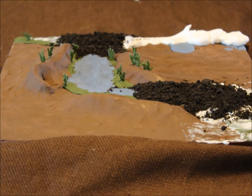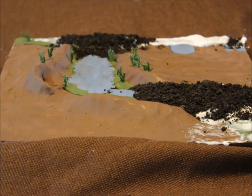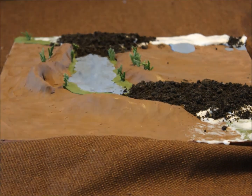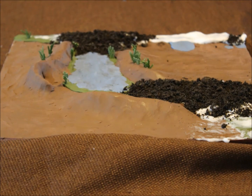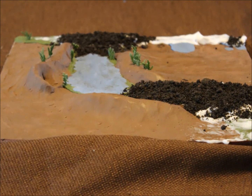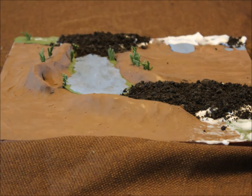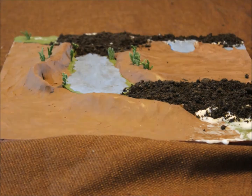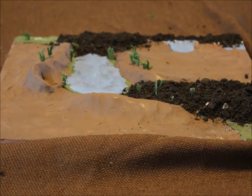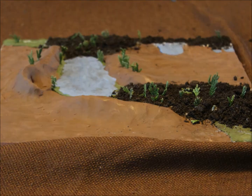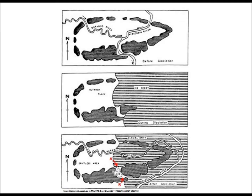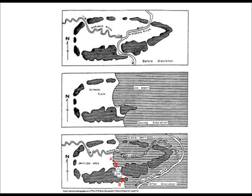A terminal moraine is a glacial feature that marks the maximum glacial advance. The moraines are created when a glacier advances and pauses at a location. The glacier continues to progress forward from behind but continues to melt at the toe of the glacier. The end result is that the glacier acts as a conveyor belt bringing sediment to the front of the glacier. The moraines at Devils Lake are called terminal moraines because they mark the furthest extent of the Green Bay lobe.